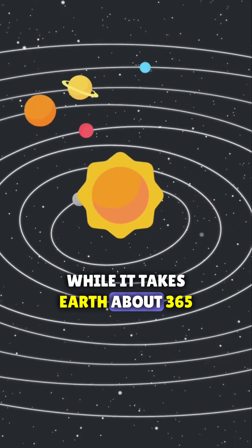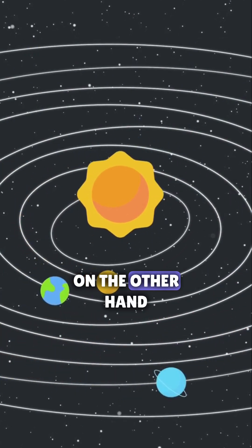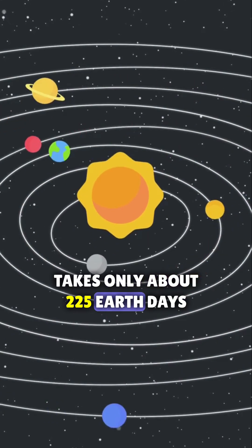While it takes Earth about 365 days to complete a full orbit around the Sun, Venus, on the other hand, takes only about 225 Earth days.